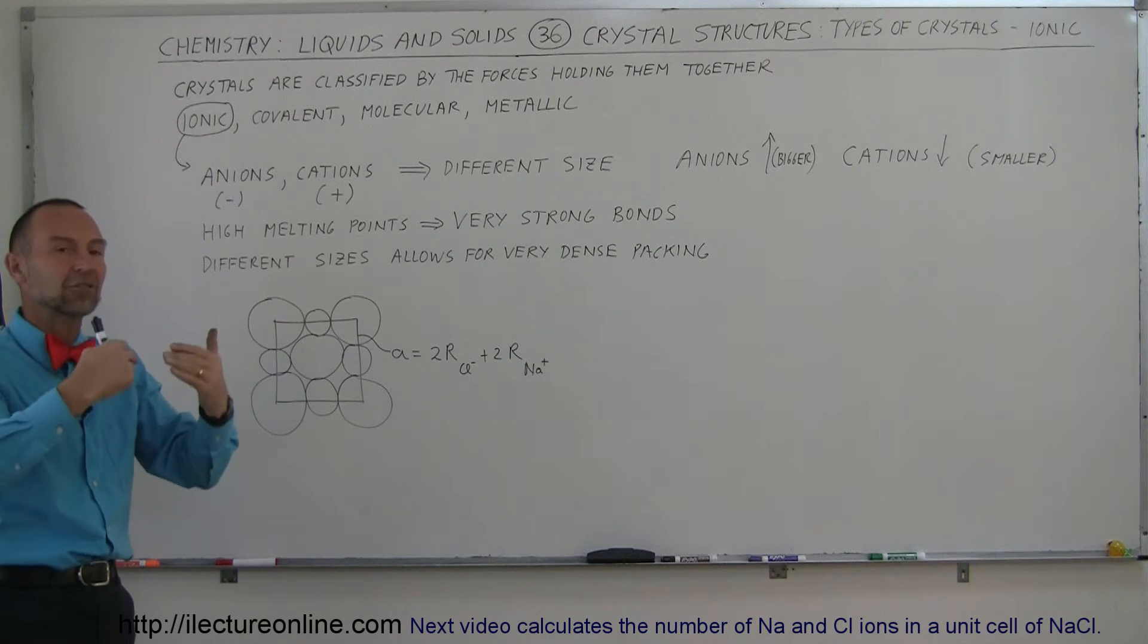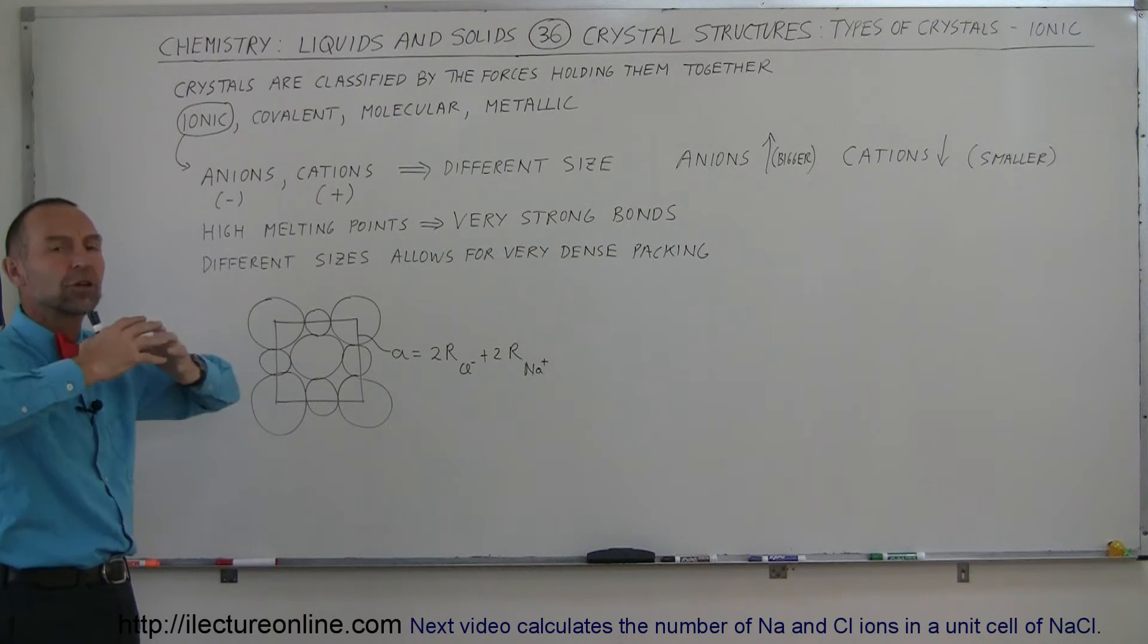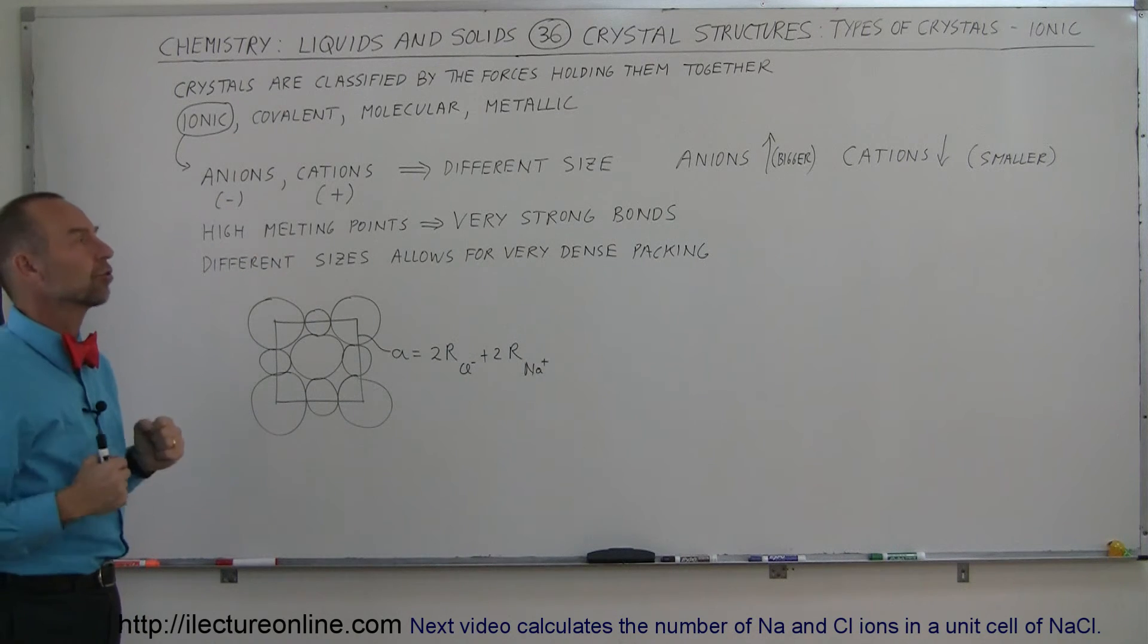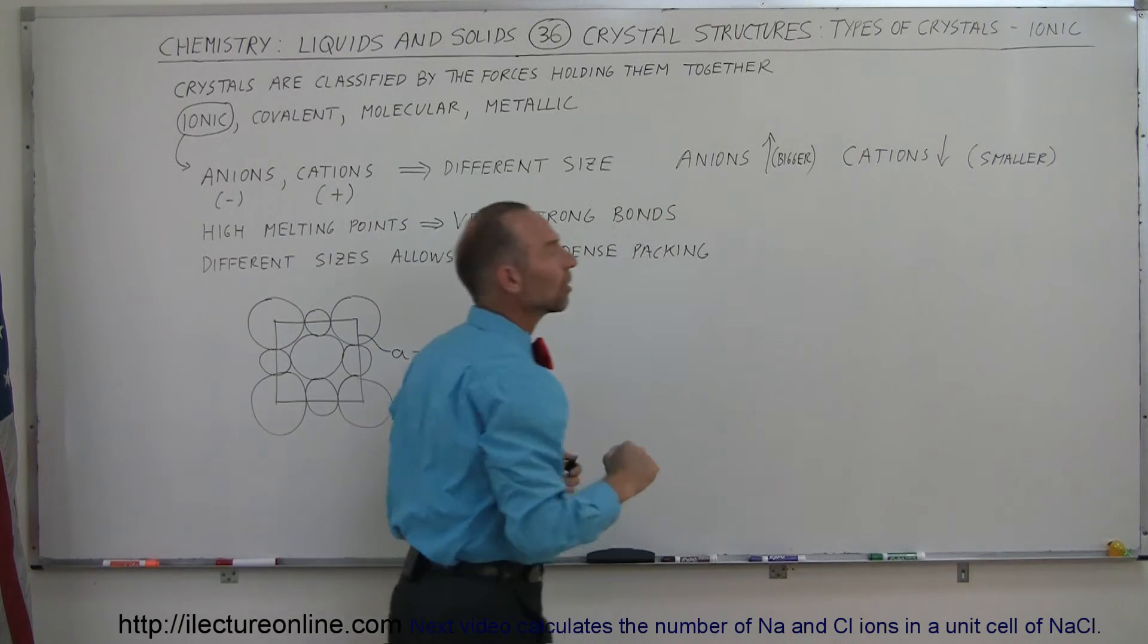Anions, which gain an extra electron, there's more negative charge than positive charges, they tend to repel each other, and negative ions tend to be larger in size. So you can see that anions tend to be bigger, cations tend to be smaller.